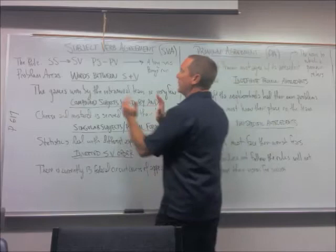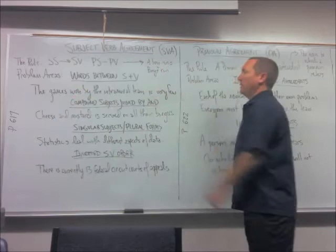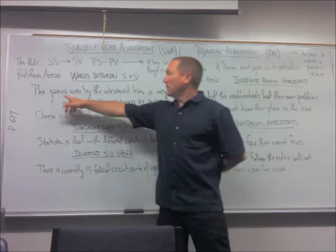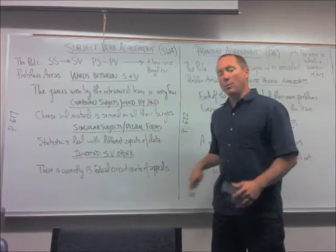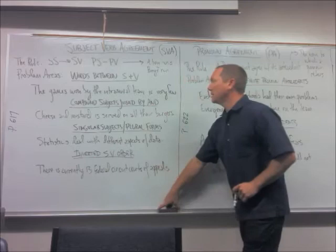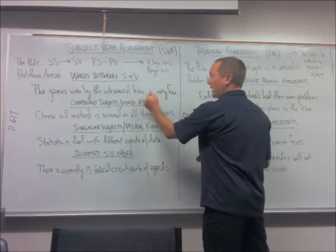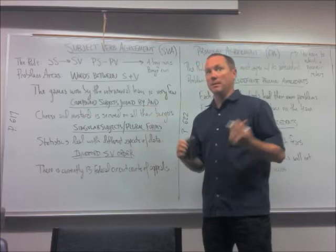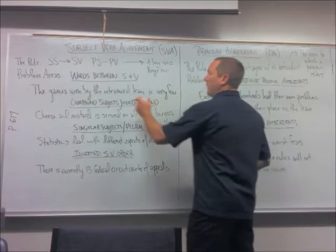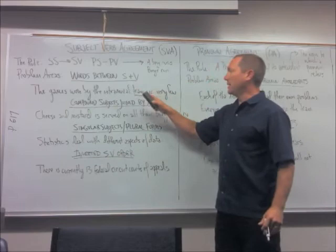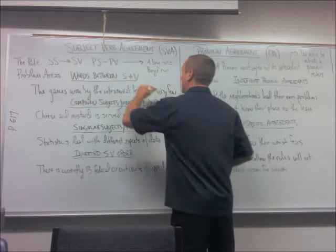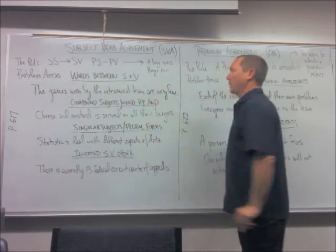But what about when we put a block of words in between the two? For example: 'The games won by the intramural team is very few.' The subject is games and the verb is is — which we recognize quickly is incorrect, because we wouldn't say 'the games is,' we'd say 'the games are.' The error was made because is sits right next to team, and typically team goes with is. The extra words confused us, making us hear 'team is' instead of 'games are.' But are is correct because games is the subject.